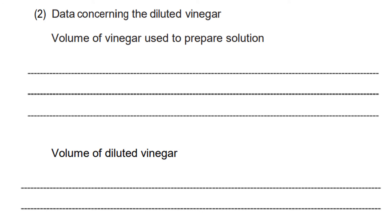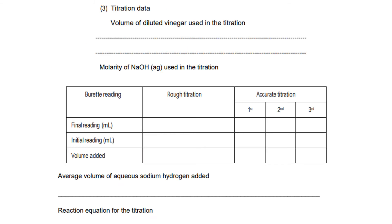Next is data concerning the diluted vinegar. Volume of vinegar used to prepare the solution — it can be whatever volume you used; I used 25 ml. Volume of diluted vinegar — whatever volume you used, you must write it here; in this example I will be using 250 ml. Volume of diluted vinegar used in titration is again 25 ml.